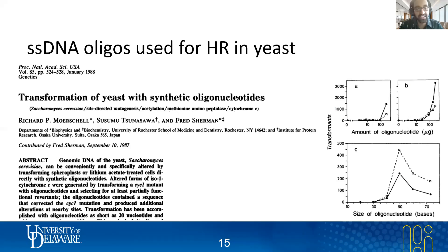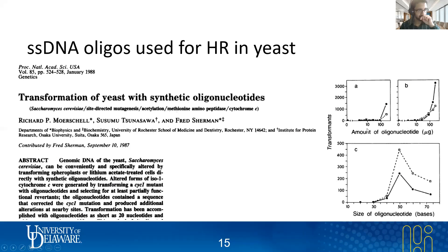In that 1988 paper, you see the use of oligonucleotides as short as 20 nucleotides. Twenty is awfully small — who knows if you're getting good targeting in that case. But yeast is hyper-effective at homologous recombination.